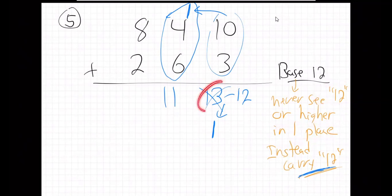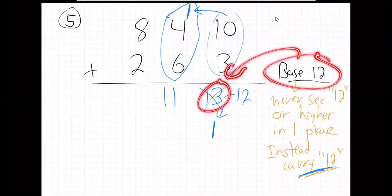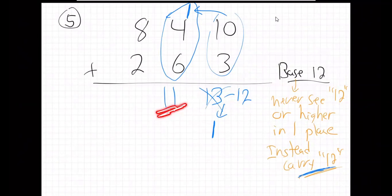So when we hit 12 or more, like when we hit this 13, we had to carry, right? When you hit 12 or more in base 12, that's when it's time to carry. So if we're only at 11, I'm not going to carry. Just leave it. That one's good. Next column.